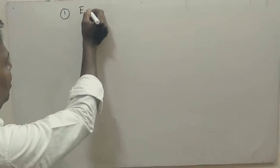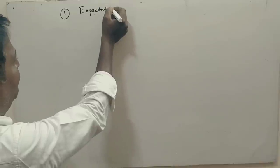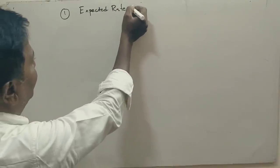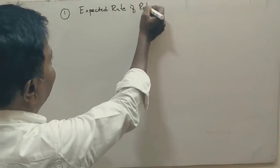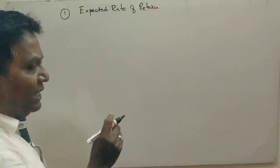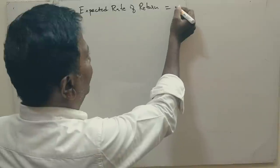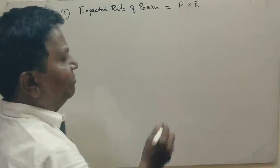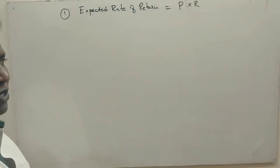See, generally, we have a formula called for expected rate of return. Famously, we called as ER, Expected return. We get probability into returns. Probability into returns.